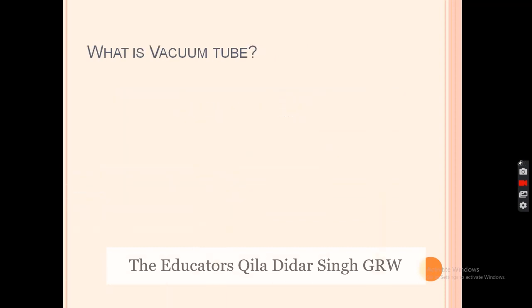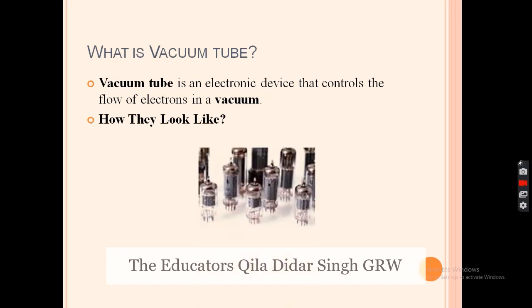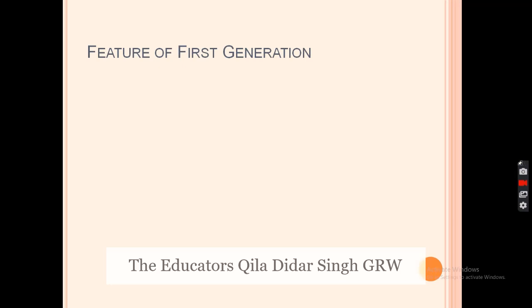What is a vacuum tube? A vacuum tube is an electronic device that controls the flow of electrons in a vacuum. You can see the picture of how it looks.